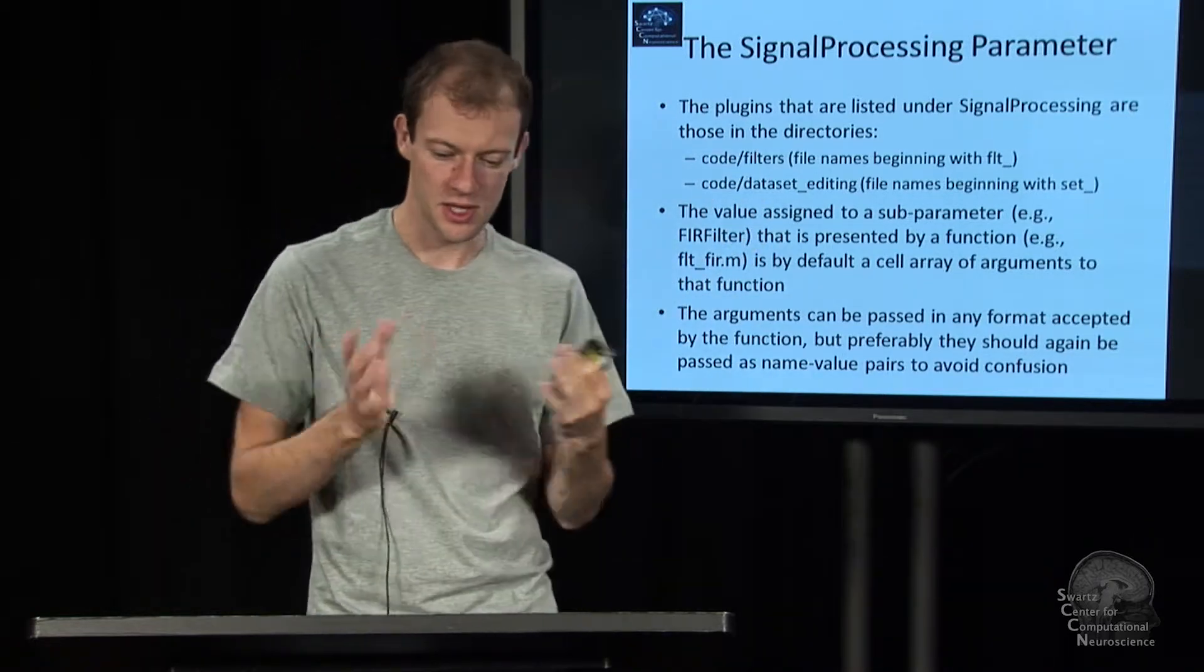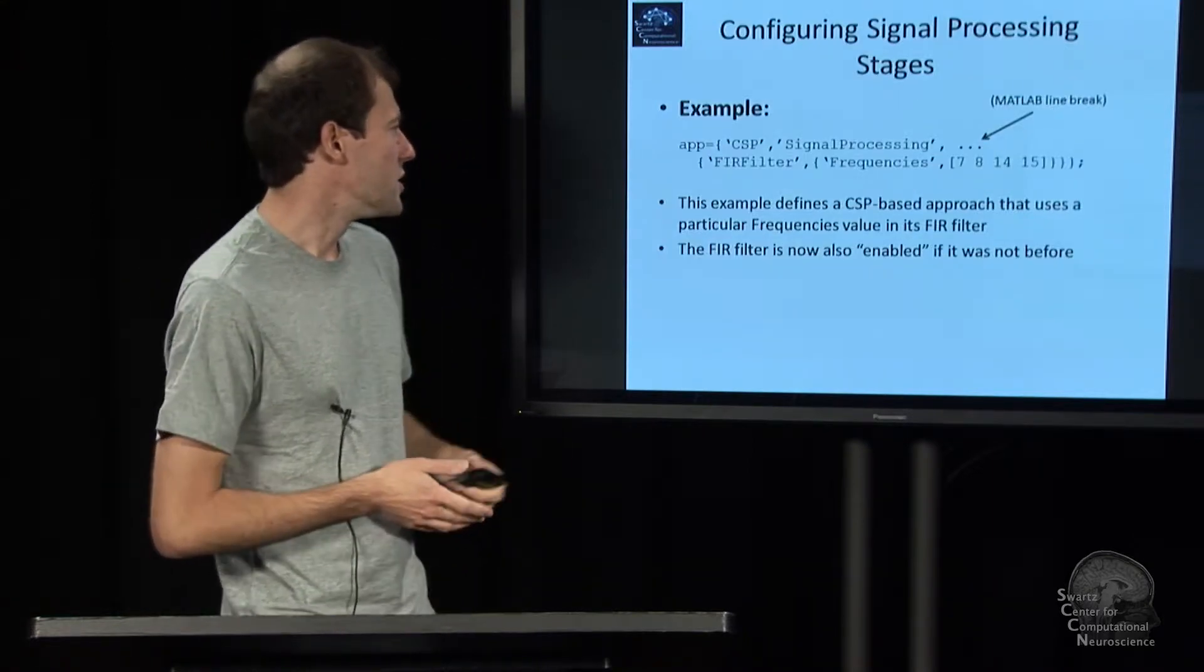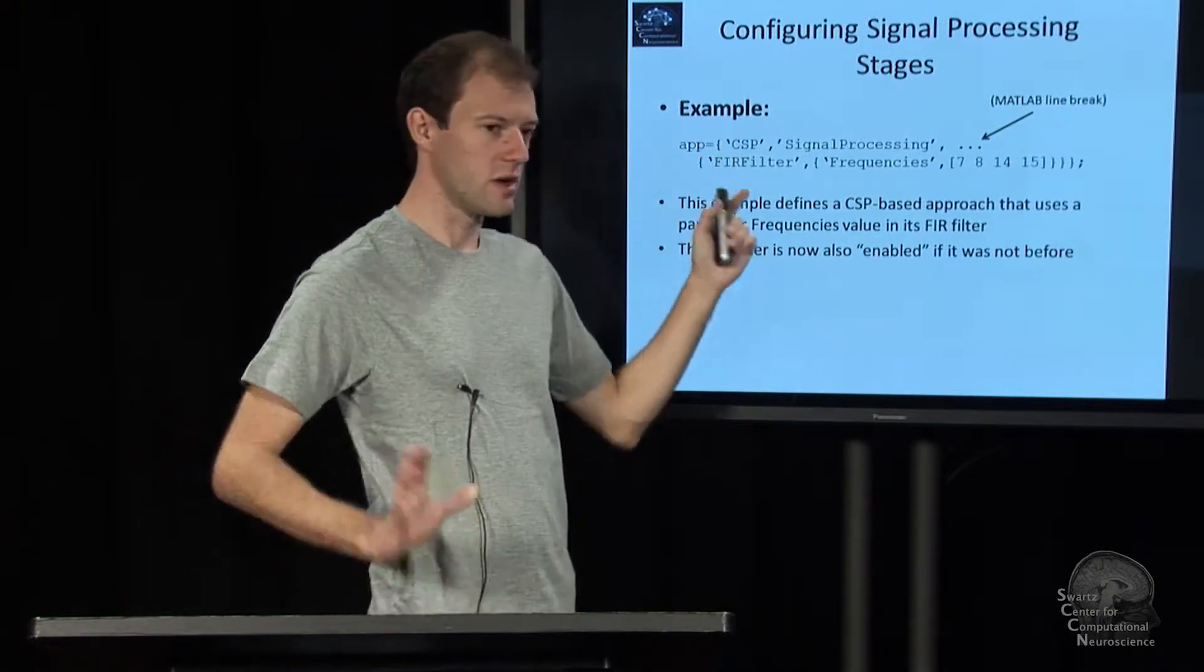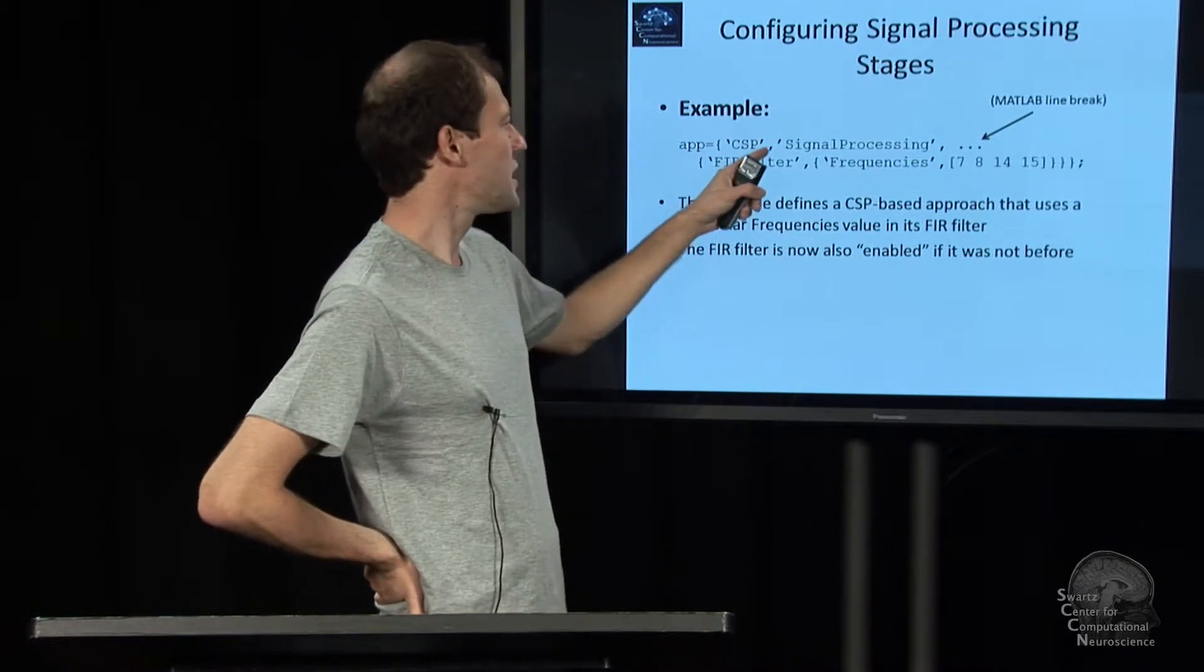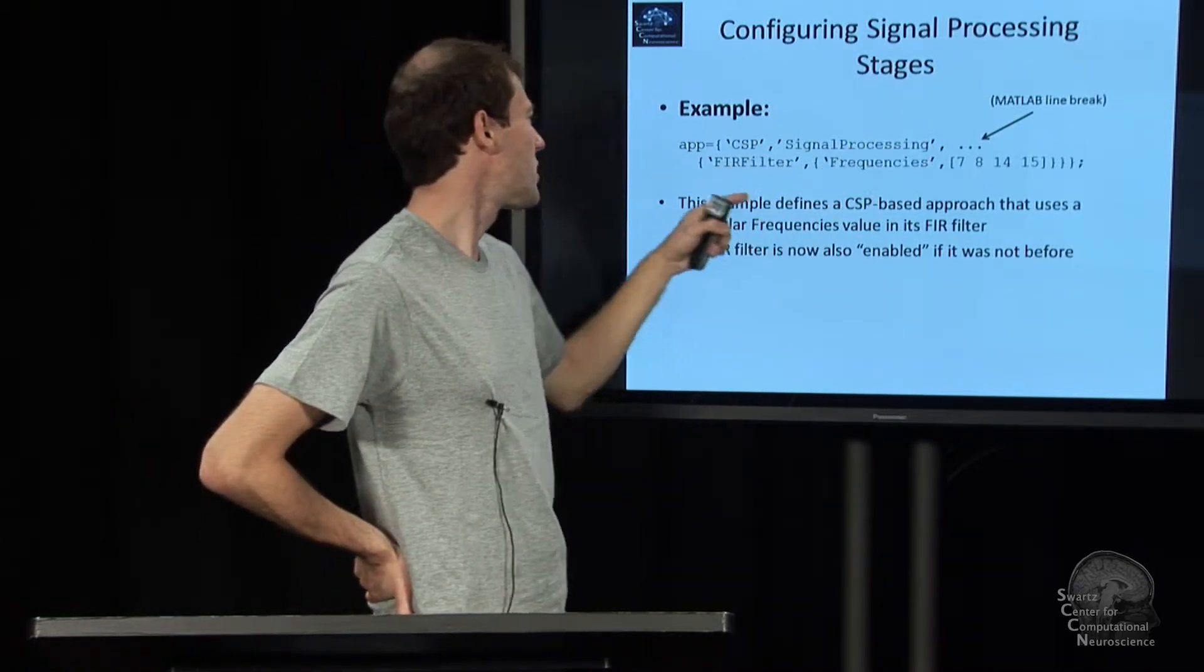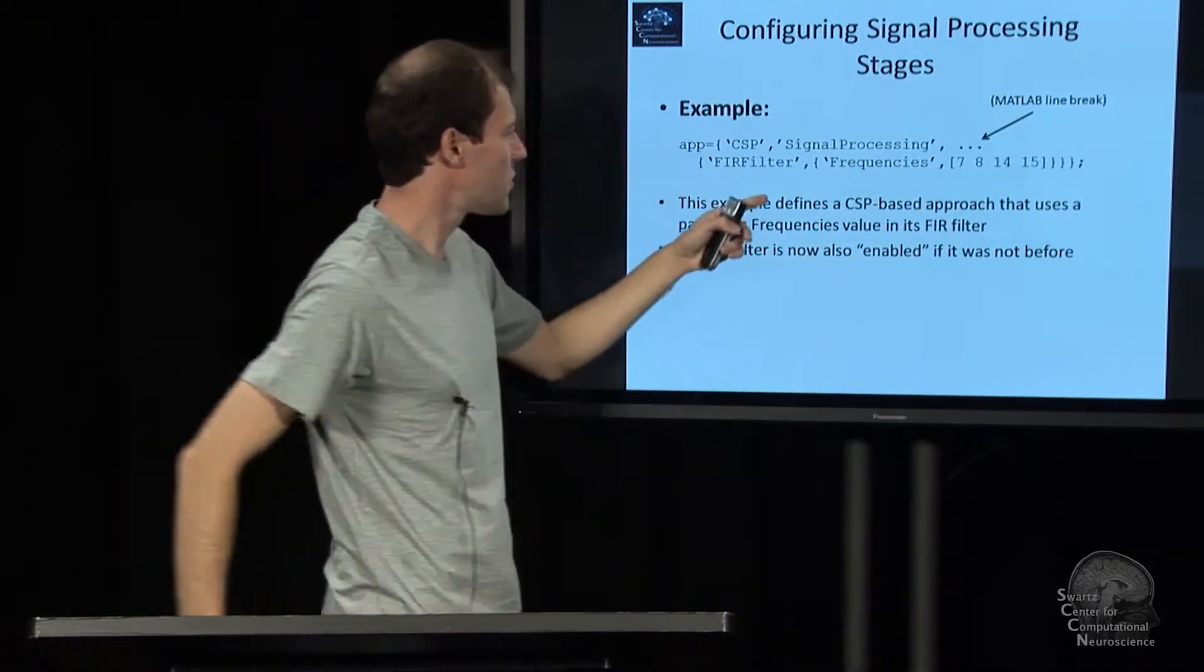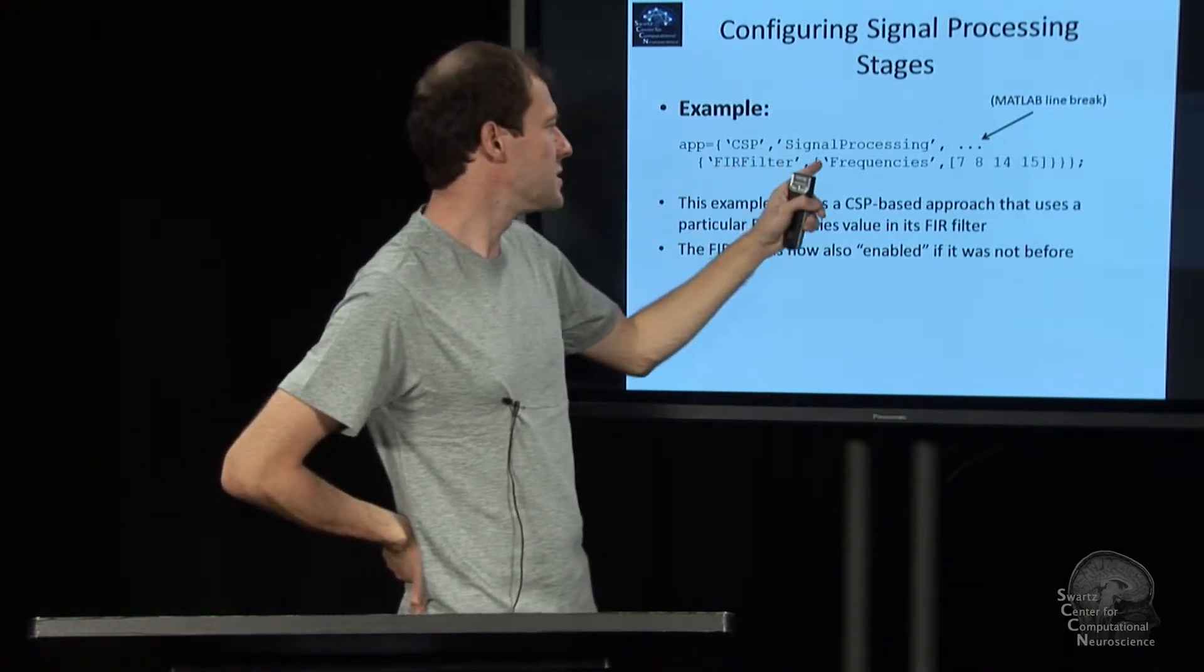Here's an example for that. I'm making a new approach, I say I want to use a CSP paradigm, but I want to use a different frequency band. So I say I assign something to the signal processing parameter and overwrite some defaults. That's a group, it has multiple subparameters, and I want to override something for the FIR filter subparameter.